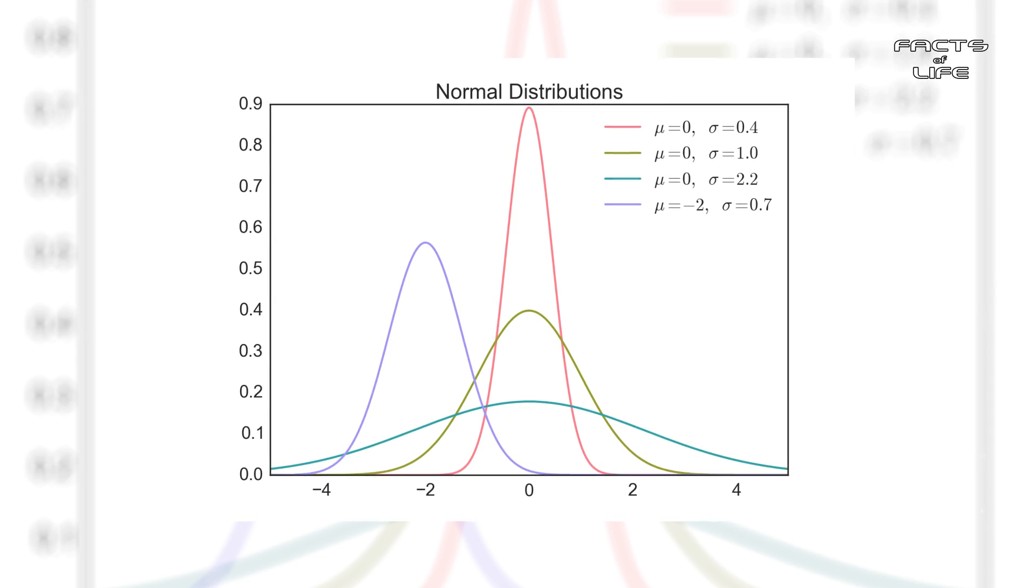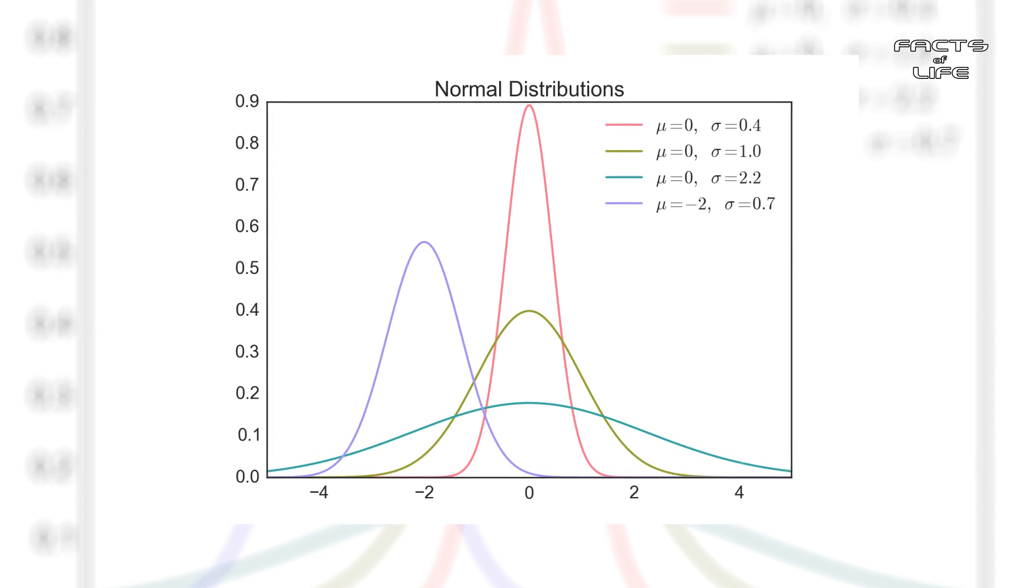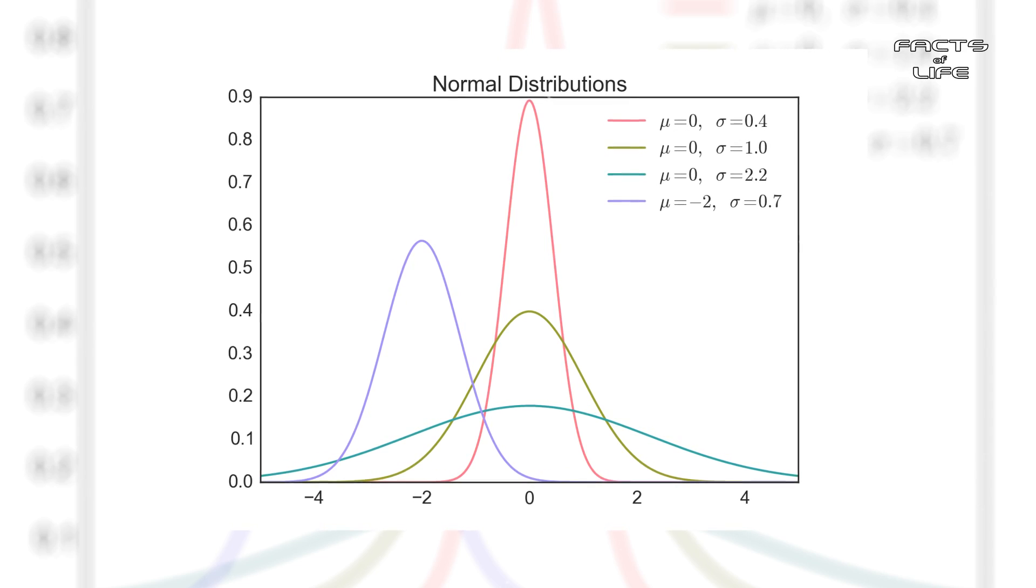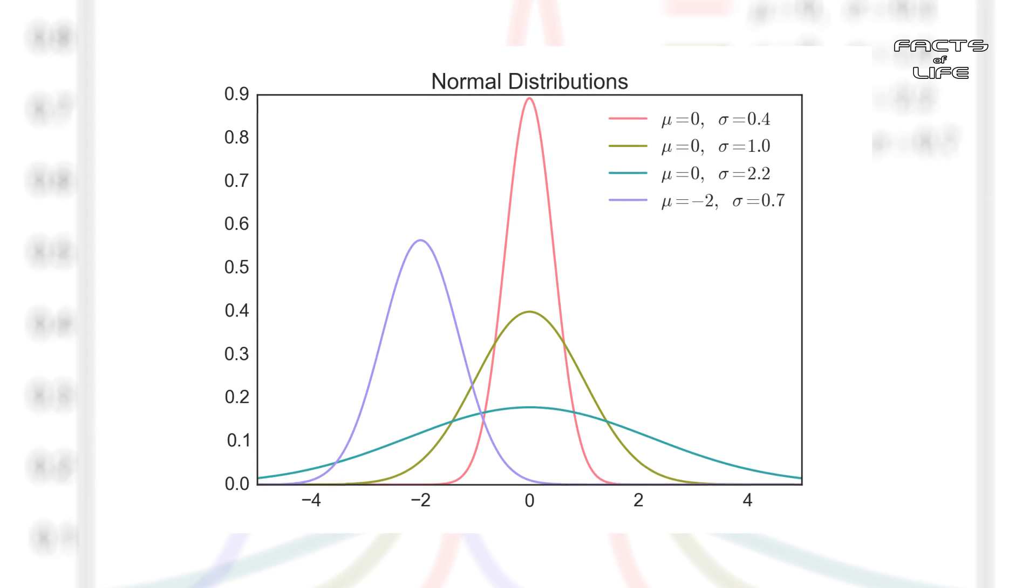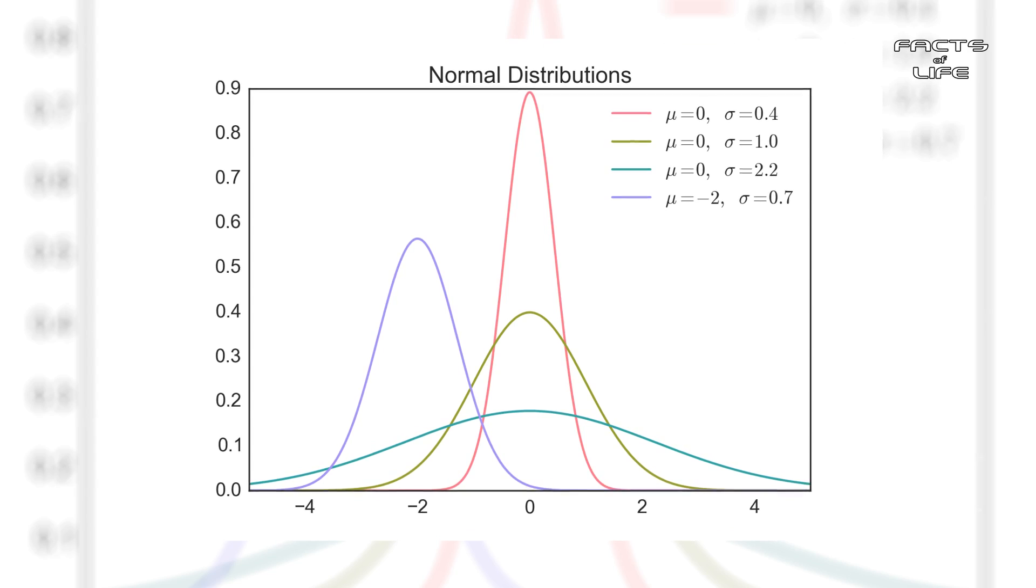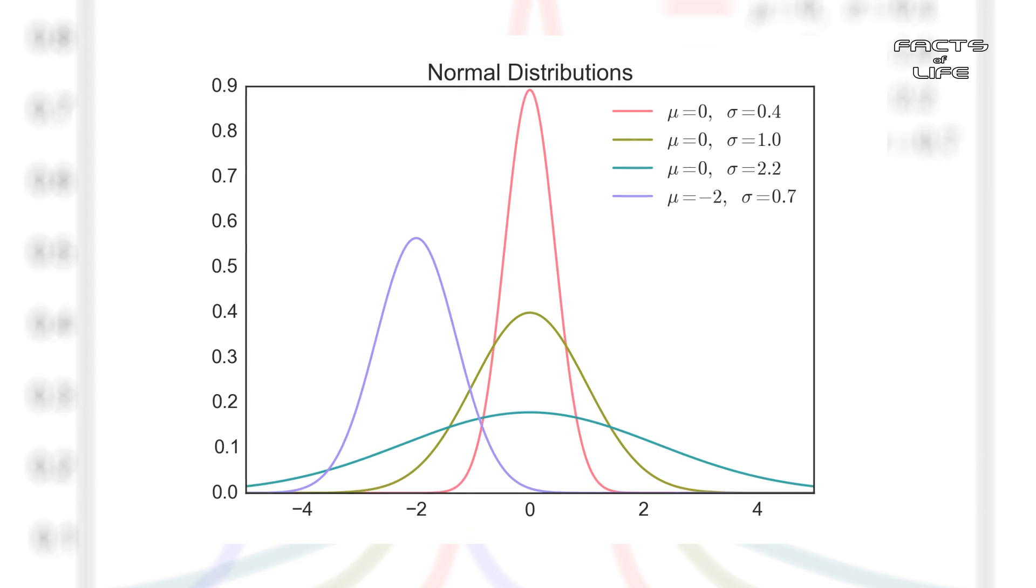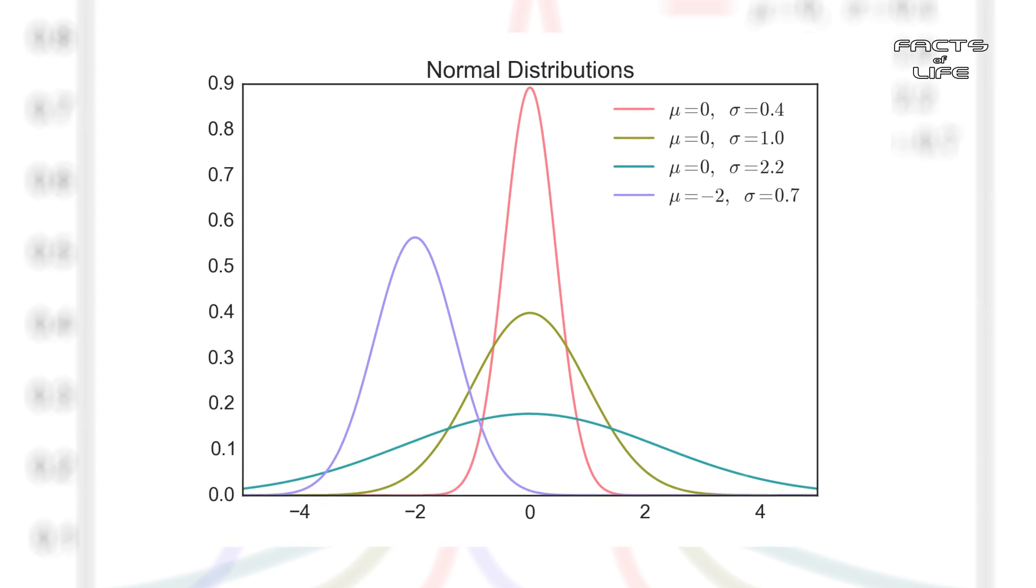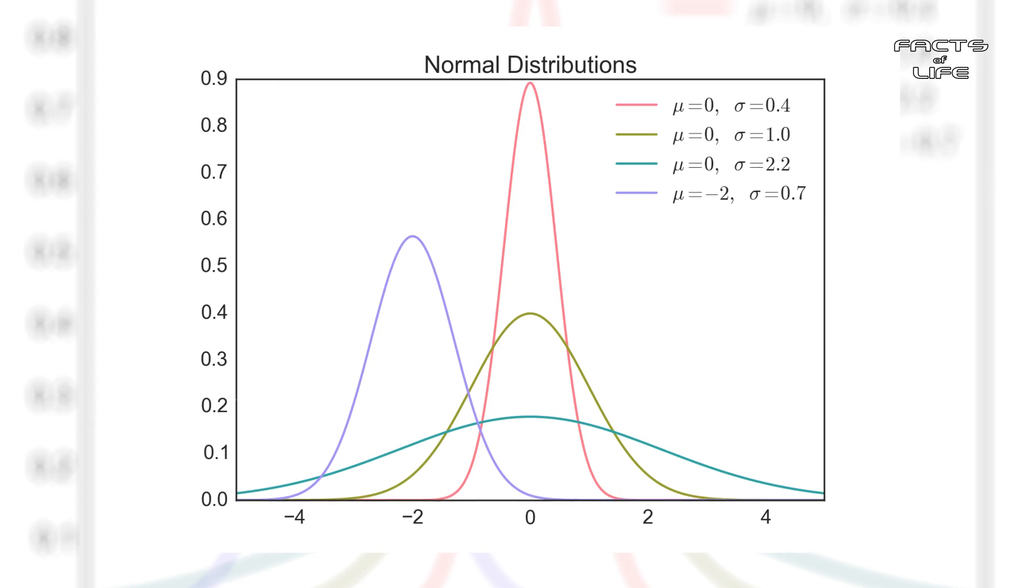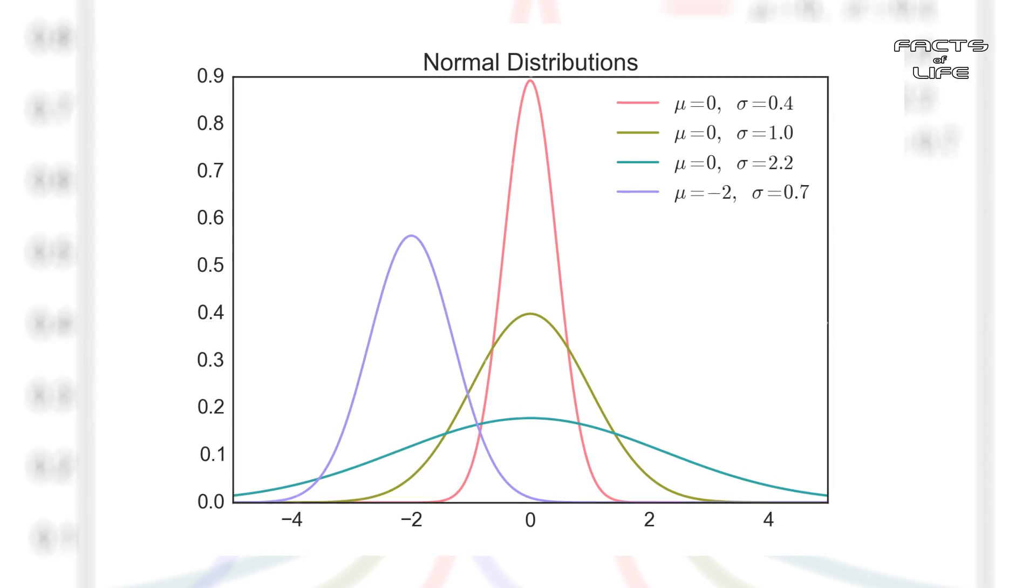Whenever you see Pi lurking in a complex equation, assume a circle is hidden somewhere within the mathematical fabric. In the case of normal probability distribution, Pi is delivered through the Gaussian integral, also known as the Euler-Poisson integral, which features the square root of Pi. In fact, all it takes is slight changes in variables in the Gaussian integral to compute the normalizing constant of the normal distribution.